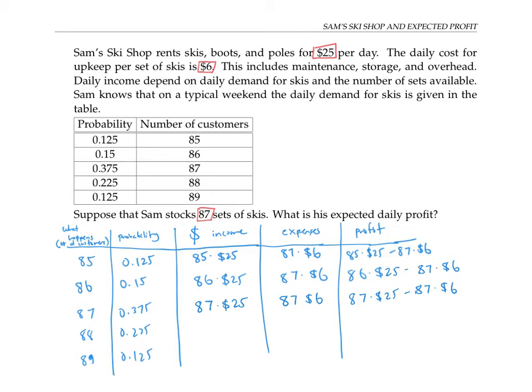But something a little bit different happens if there are 88 customers who show up—he only has 87 sets of skis to rent. So he's only going to be able to get an income of 87 times the $25. The same thing would happen if 89 customers show up—he still can only rent 87 skis. The maintenance costs will also be a fixed cost of 87 times 6.